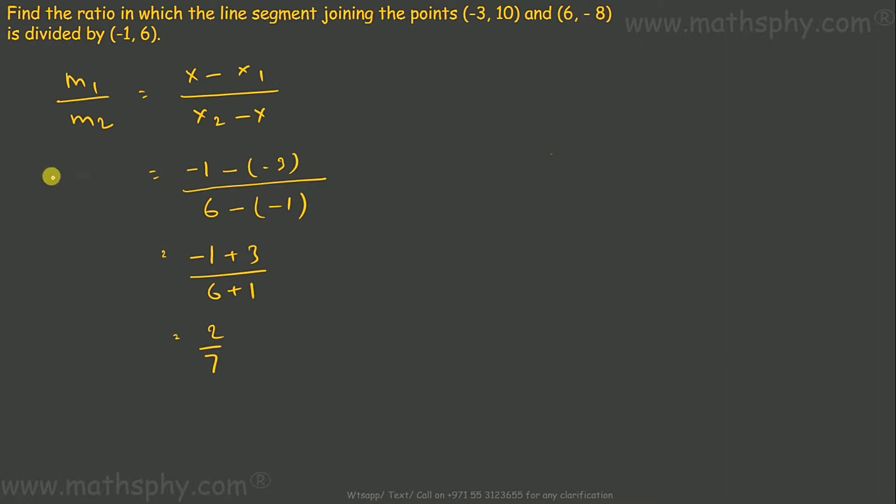You can find this through Y also. M1 over M2 equals (Y - Y1)/(Y2 - Y). Y here is 6, Y1 is 10, Y2 is -8. So (6 - 10)/(-8 - 6) equals -4/-14, which is 2/7.